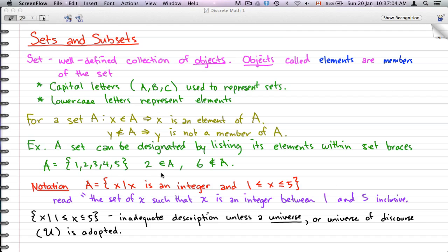Now, 2 is an element or a member of A, but 6 is not a member of A, because 6 is not in the set, but 2 is in the set.